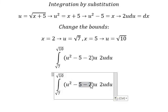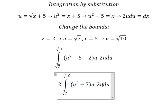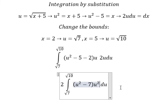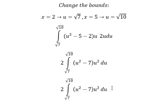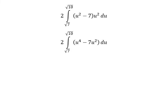So we have (u² - 5 - 2)u times 2u du, which simplifies to 2(u² - 7)u² du. This gives us 2(u⁴ - 7u²) du.